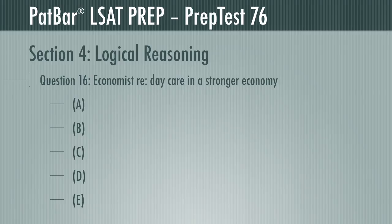Question 16 features an economist's argument that more parents will need daycare for their children in a stronger economy, that daycare workers will get better jobs in a stronger economy, and that therefore daycare will be harder to find. You're to find the assumption required to make the argument work. A required assumption problem means only the correct answer would destroy the argument if it is not true.